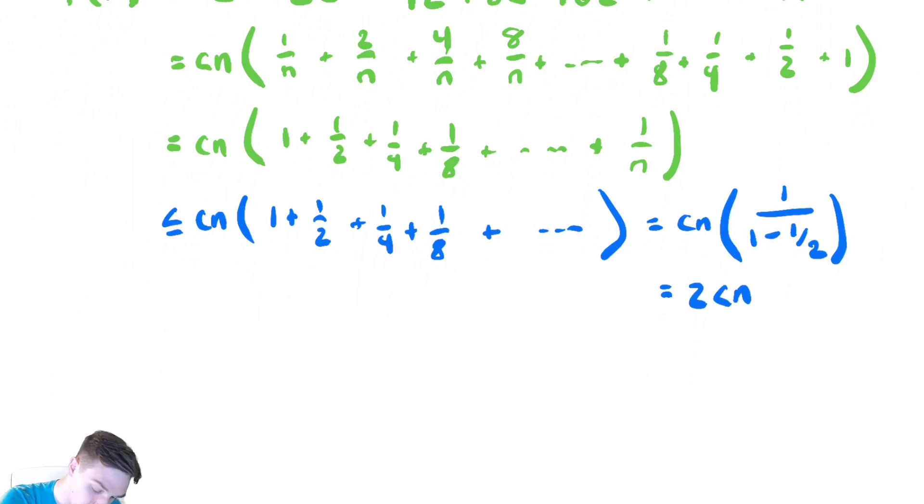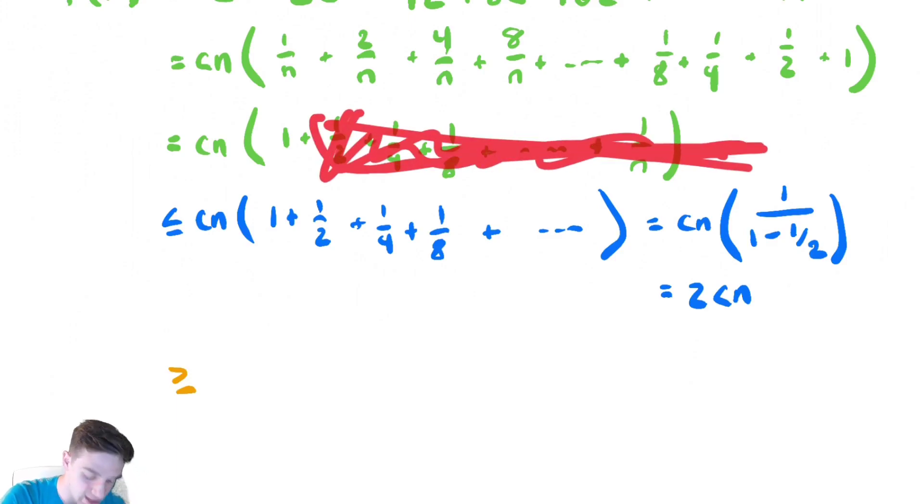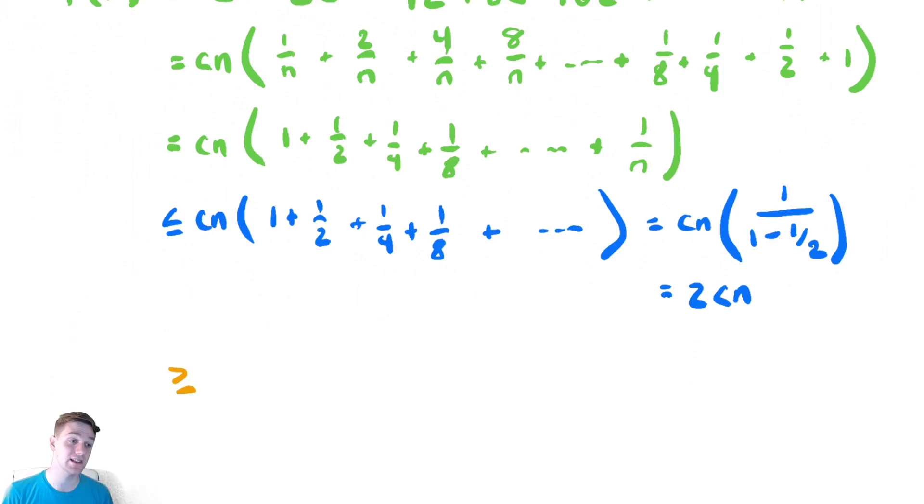To bound this below is also quite easy. The stuff in blue has told me that it's bounded above by some constant, 2c, times n. Now I need to bound it below by some constant times n. The easy way to do that is to just throw every single term in the summation except for the first. If I get rid of everything except the first term in the summation, the 1, then I would be left with cn times 1. So cn there.